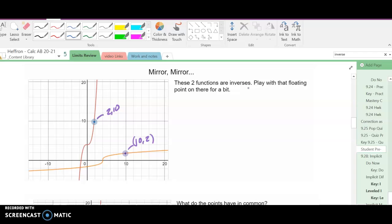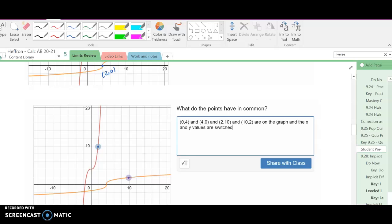These two functions are inverses. Play with the floating points a little bit, we'll see that the x and y's switch. Ten becomes ten two. Here this looks like it's over two up zero. This one is at over zero up two.